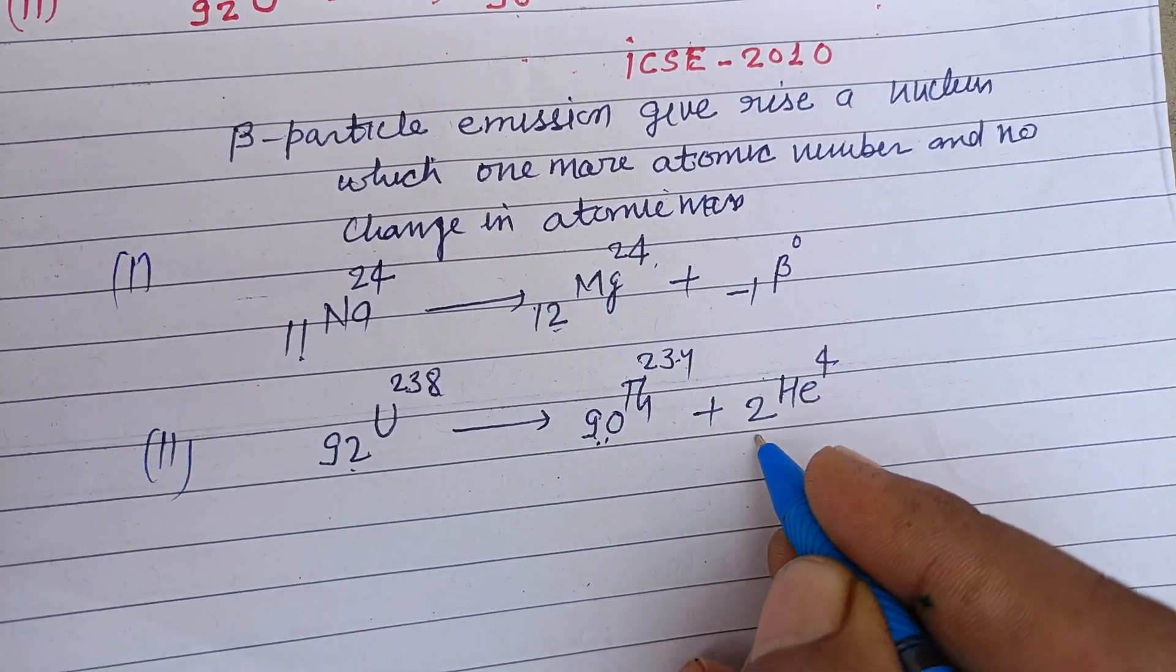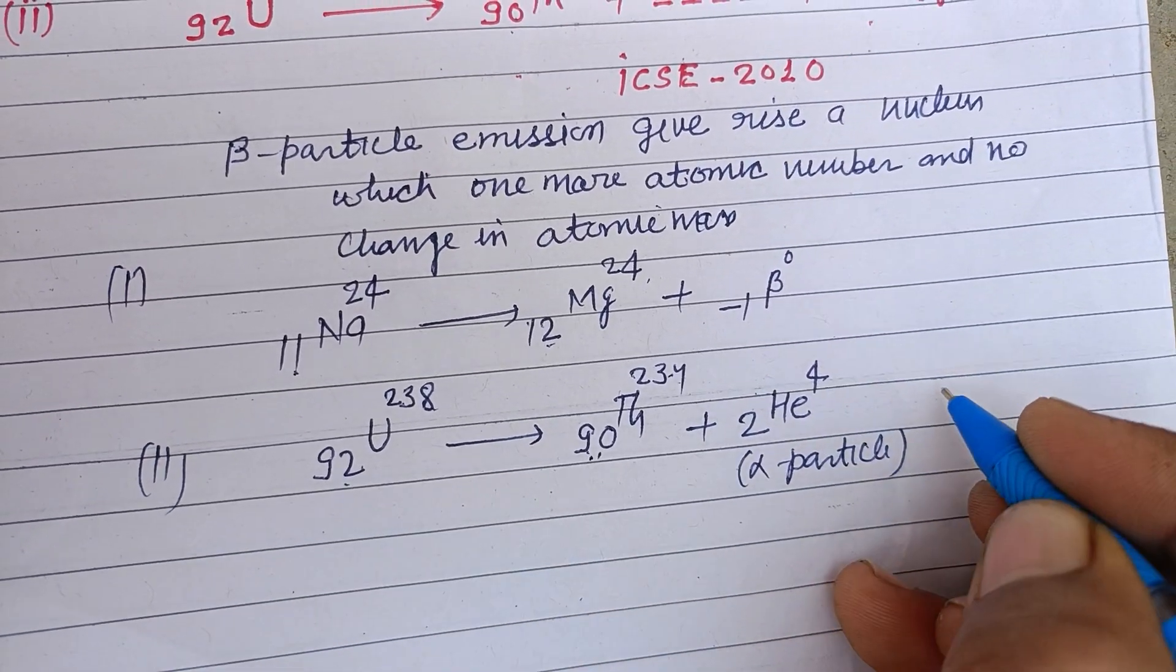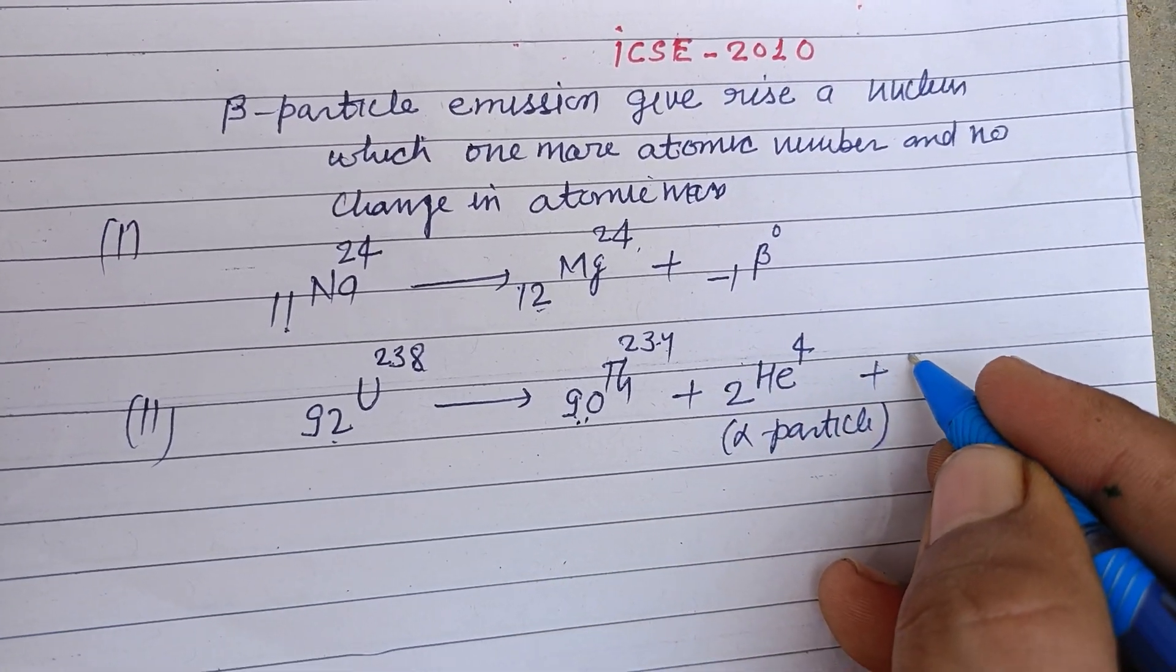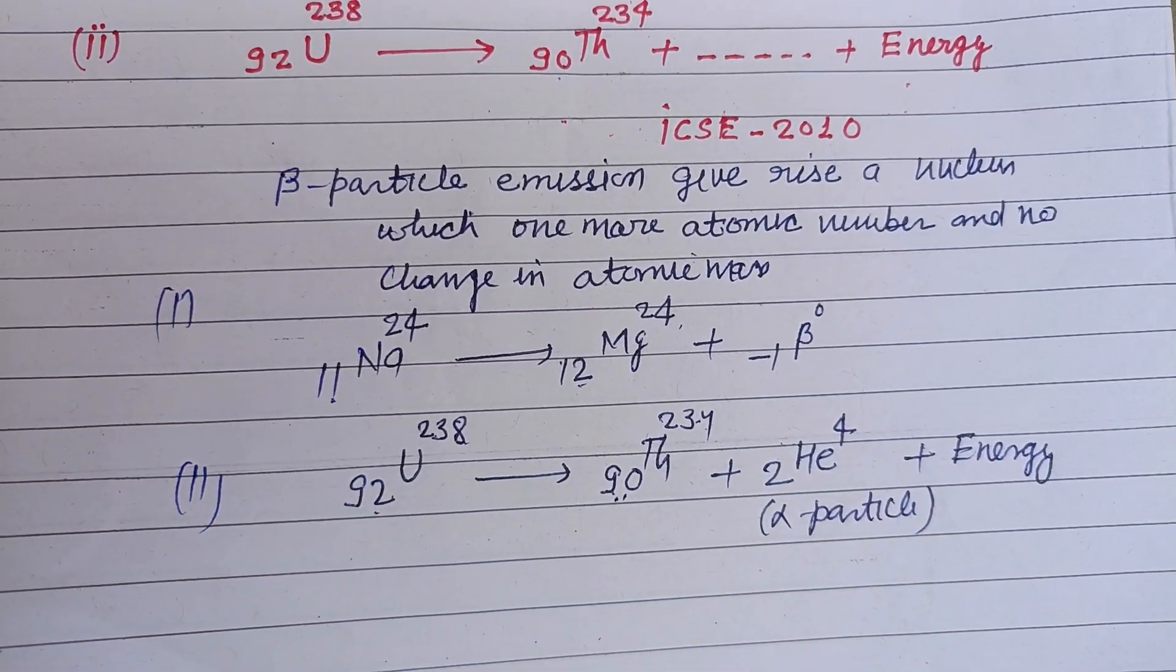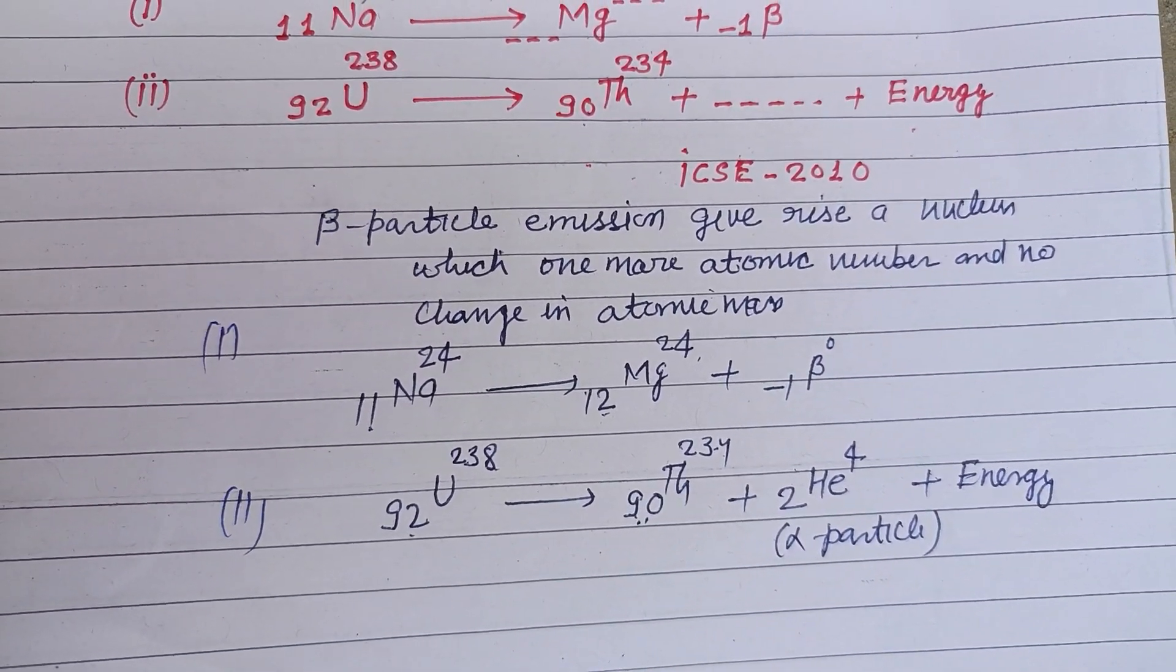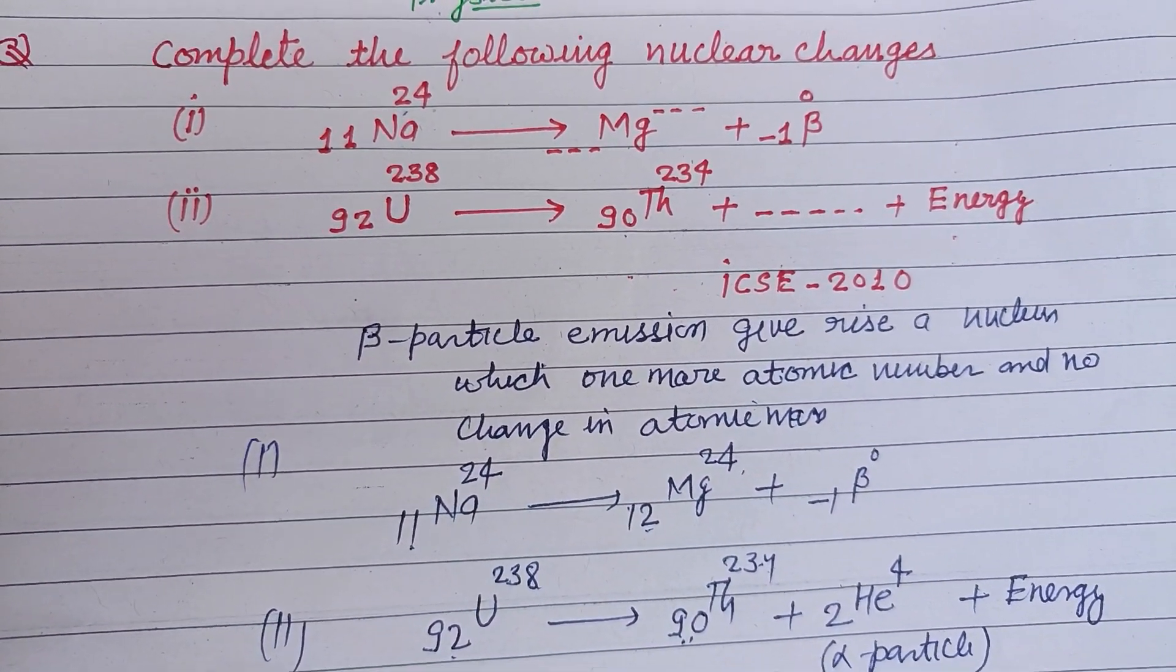2 helium 4, which is known as the alpha particle, arises and energy is also released. So this is the completion of the reaction. I hope you got it. Please like the video, subscribe to the channel. Thanks for watching.